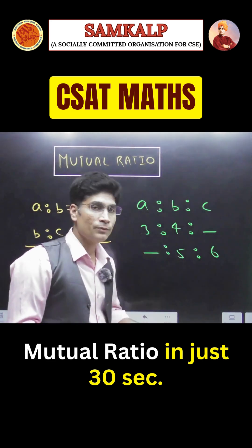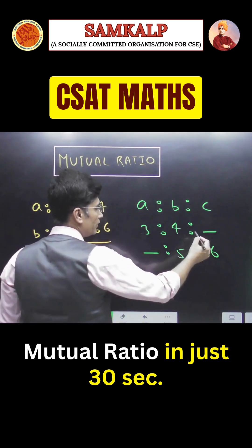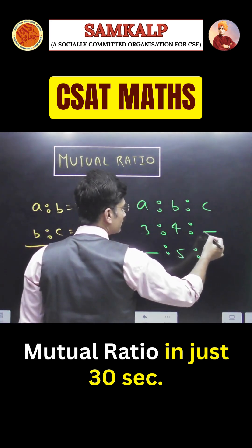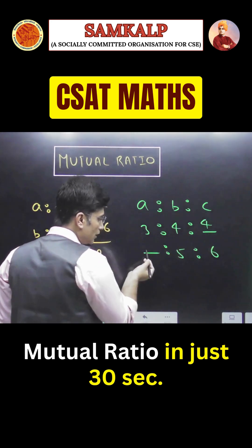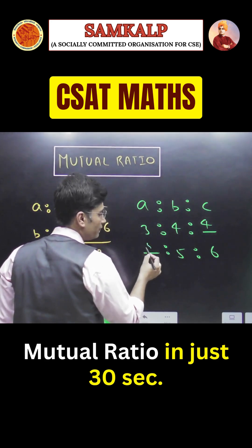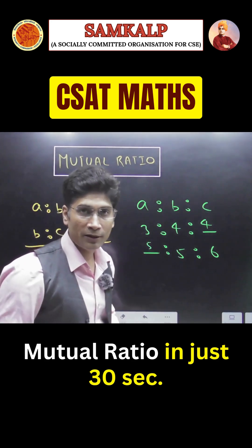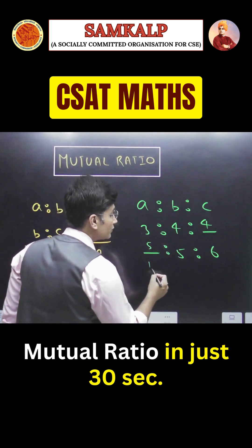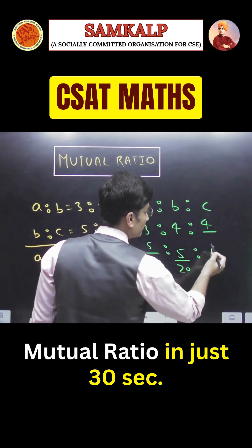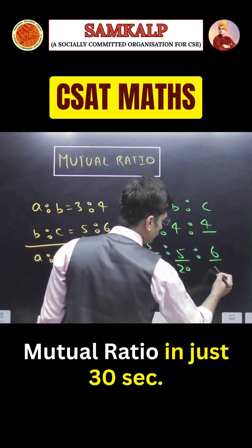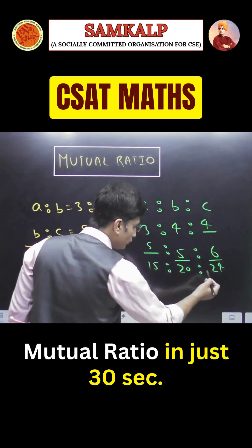Now the blank spaces have to be filled by the number next to them. So this blank space has the number next to it as 4, write down 4. This blank space has the number next to it as 5, write down 5. Now multiply the numbers in each column: 5 × 3 is 15, 5 × 4 is 20, 6 × 4 is 24. So you get your answer: 15, 20, and 24.